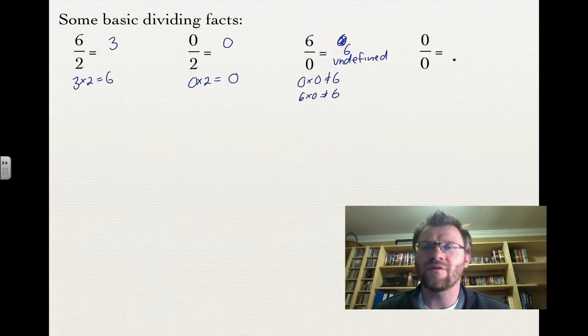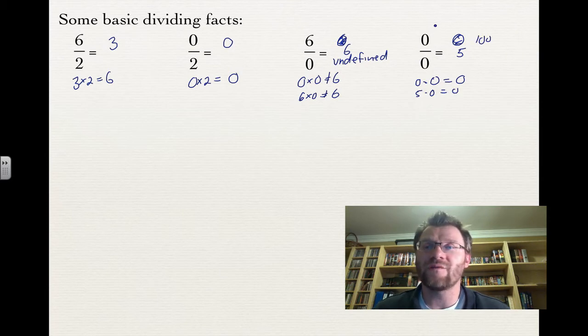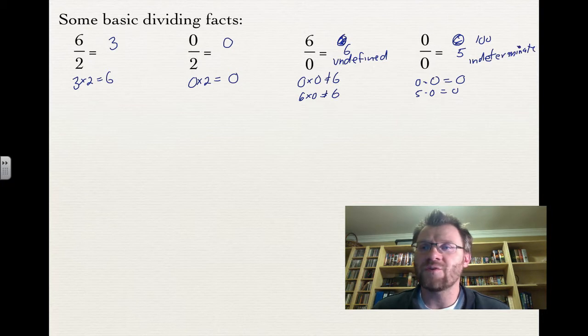And finally, 0 divided by 0. Well you might think that's 0, but 0 times 0 equals 0, so that kind of works. But if I put in a number like 5, 5 times 0 is also equal to 0. If I put in 100, 100 times 0 equals 0, so actually we call this indeterminate. Every number works, so we can't be sure which number it actually is.